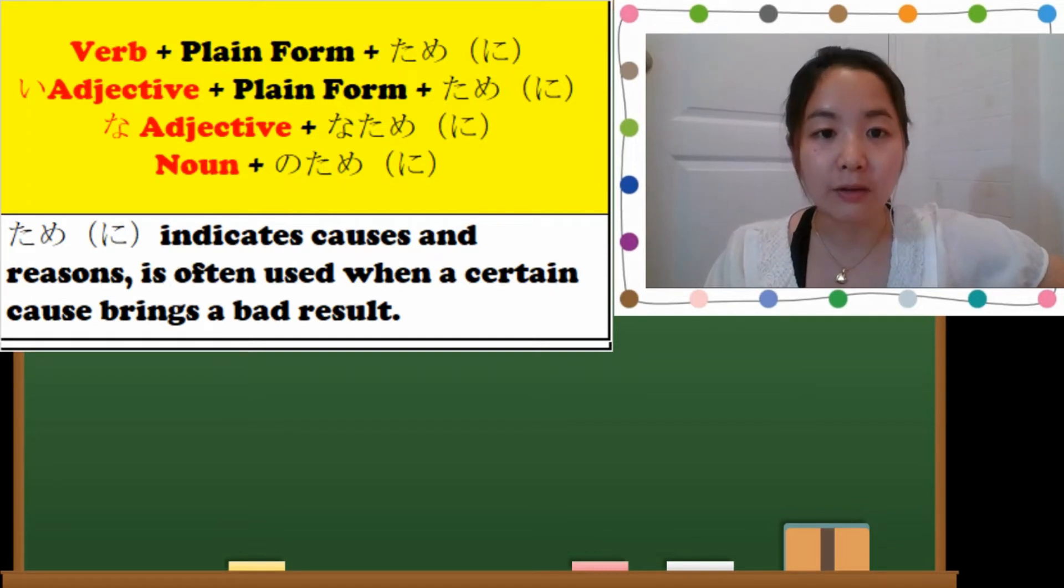So, you make it to plain form, fute iru, and then you put together with tame. Tame-ni.